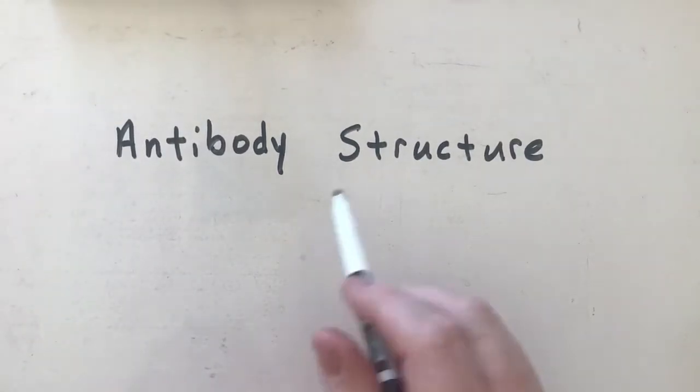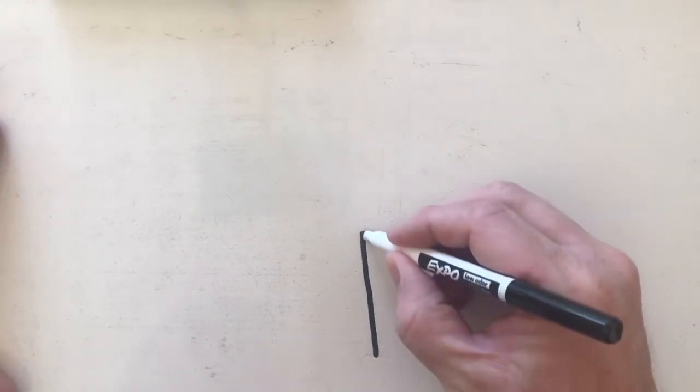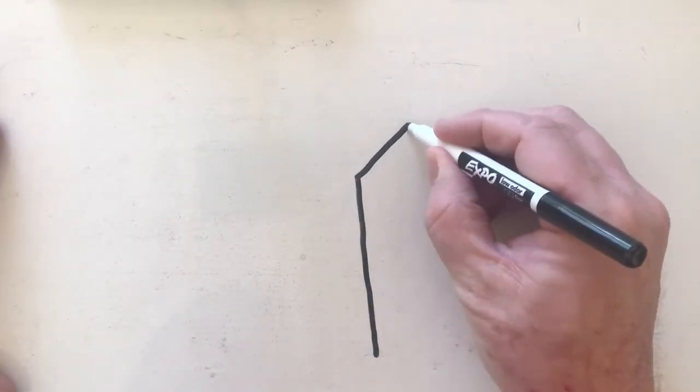In this video, we're going to be talking about antibody structure. Antibodies are basically made up of four different chains. The first chain that we have is called a heavy chain.